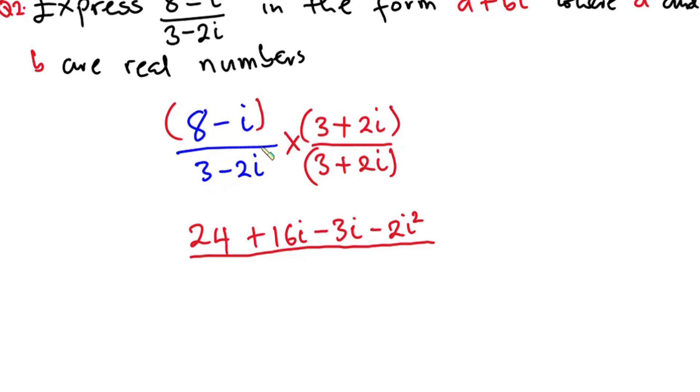Now here we have 3 minus 2i and then 3 plus 2i. So from algebraic identity, if we have a squared minus b squared, this is the same as a plus b and then a minus b. So this implies that the denominator is 3 squared minus 2i squared.